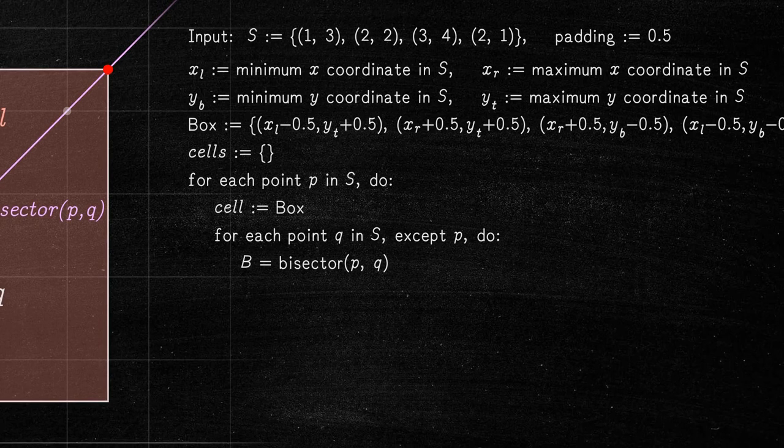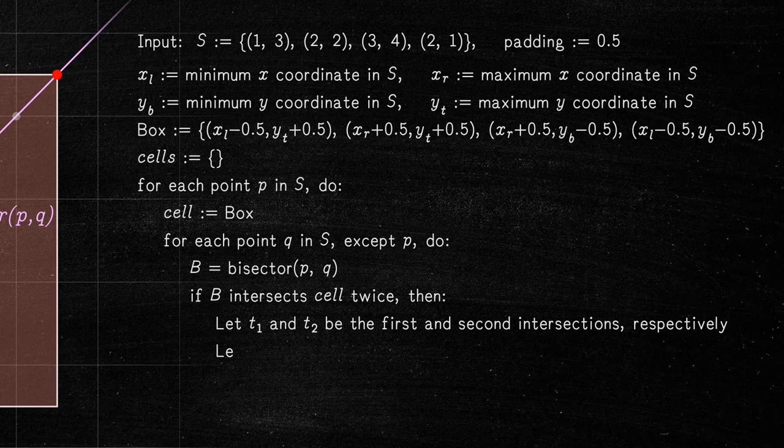If we find two intersections, we create a new cell as follows. Store the first and second intersections and the vertex of the cell that follows the corresponding intersection.